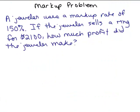Okay, let's try this markup problem. A jeweler uses a markup rate of 150 percent. And I think that's maybe in the ballpark. Sometimes it feels like it's 1,000 percent. But notice it's over 100 percent. That can happen too. You don't have to mark it up between 0 and 100 percent. So if the jeweler sells a ring for $2,100, how much profit did the jeweler make?